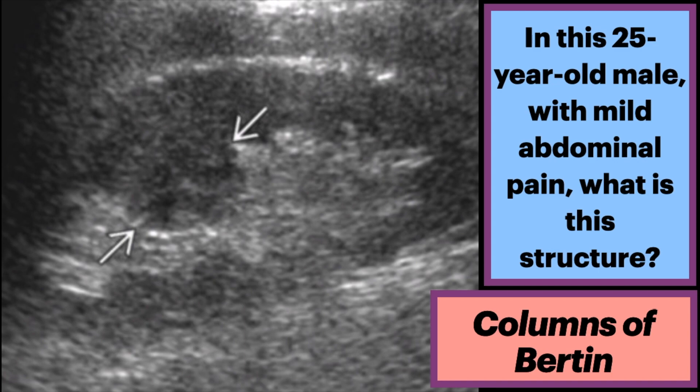Columns of Bertin represent hypertrophic medial bands of cortical tissue that separate pyramids of the renal medulla. The best diagnostic clue is the isoechoic appearance and continuity with the overlying renal cortex.